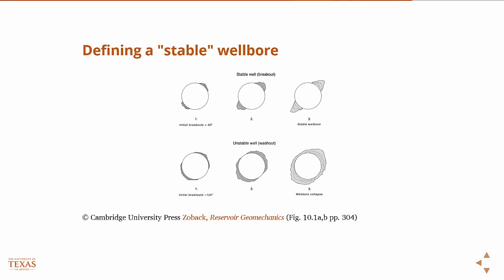A stable wellbore doesn't necessarily mean zero breakout — there's some acceptable amount of breakout and you can still have a stable wellbore. An unstable wellbore is defined by the lack of ability to remove solids with the mud. If there's a small amount of breakout and the mud can remove them, the wellbore can remain stable. An unstable wellbore is one where the mud cannot remove the solids, eventually leading to wellbore collapse, where the entire radius of the wellbore fails and can literally collapse in on the drill bit.